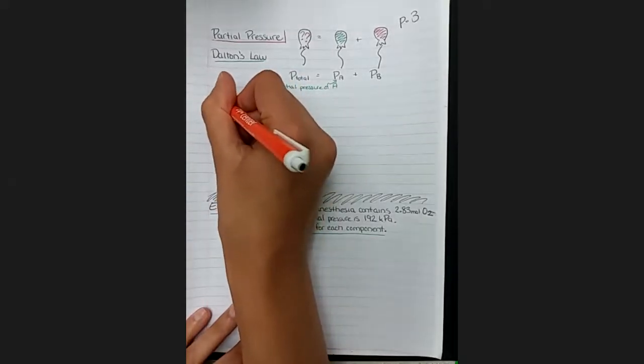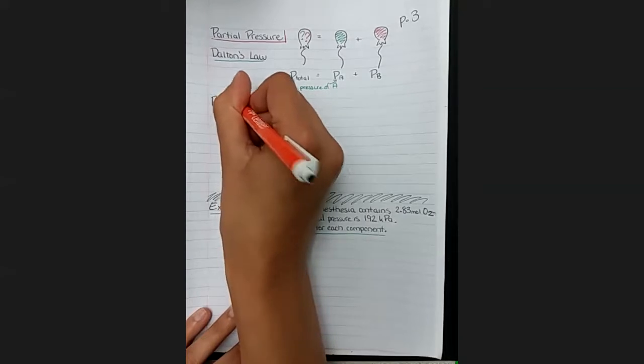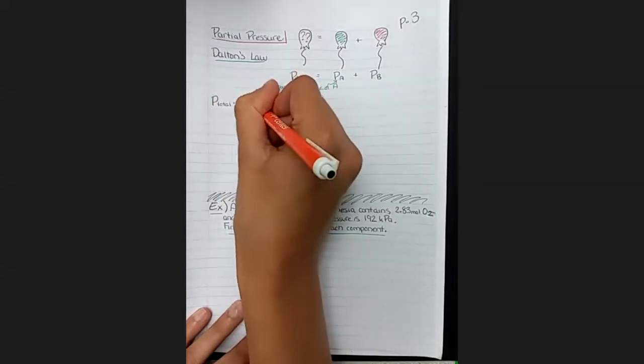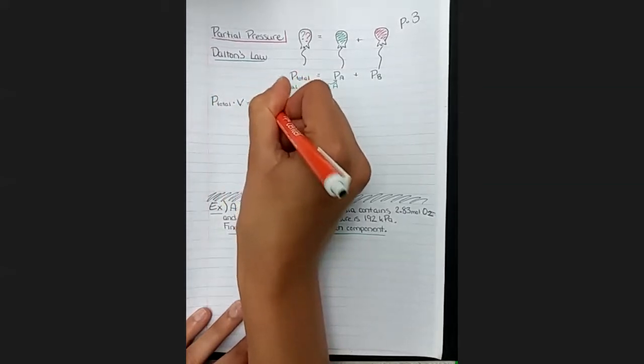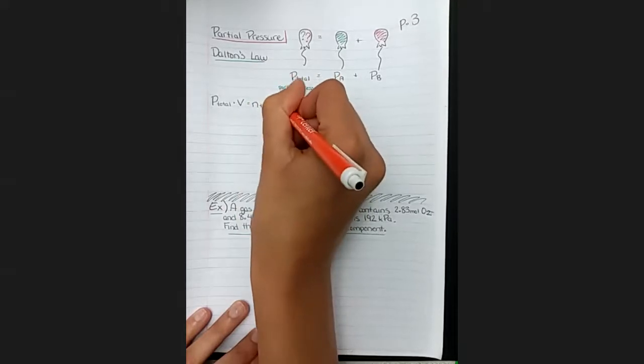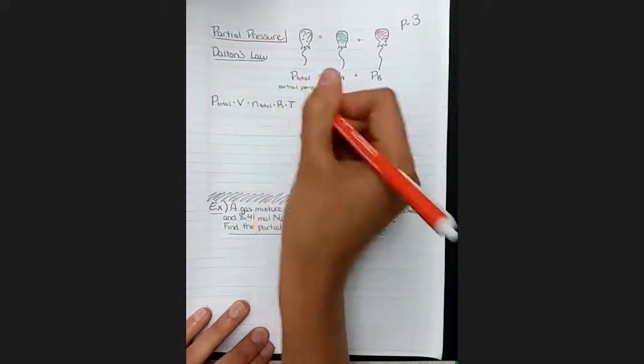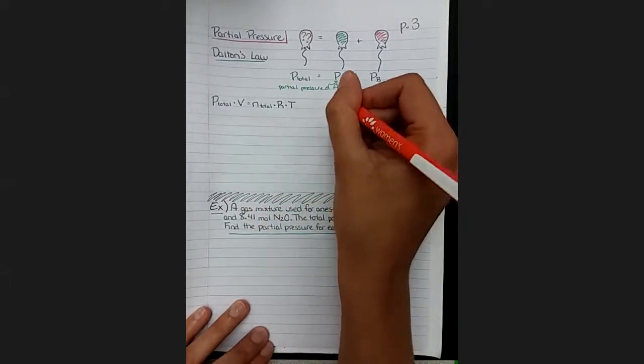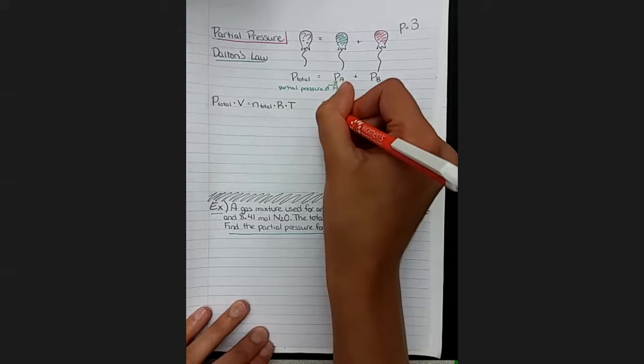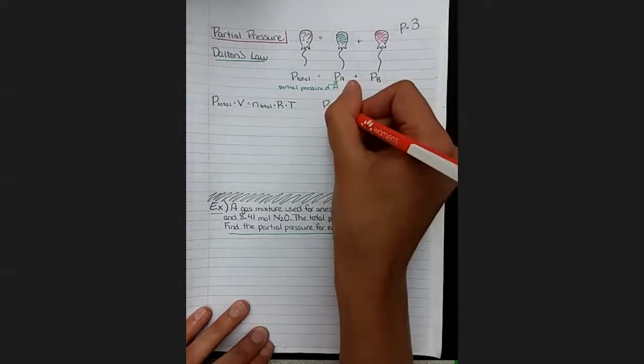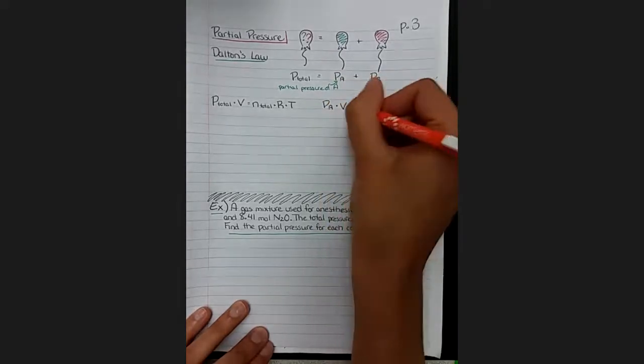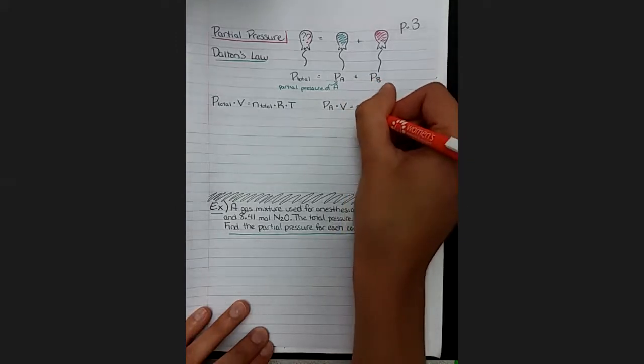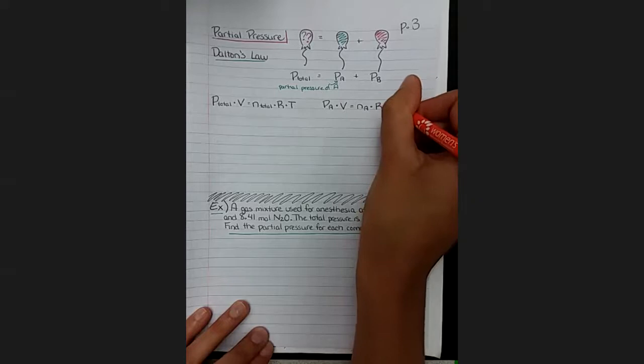If we're doing a total, we can say total pressure times volume equals total number of moles times RT. Or we can pick one of the pieces: the partial pressure of A times the volume equals the number of moles of A times RT.